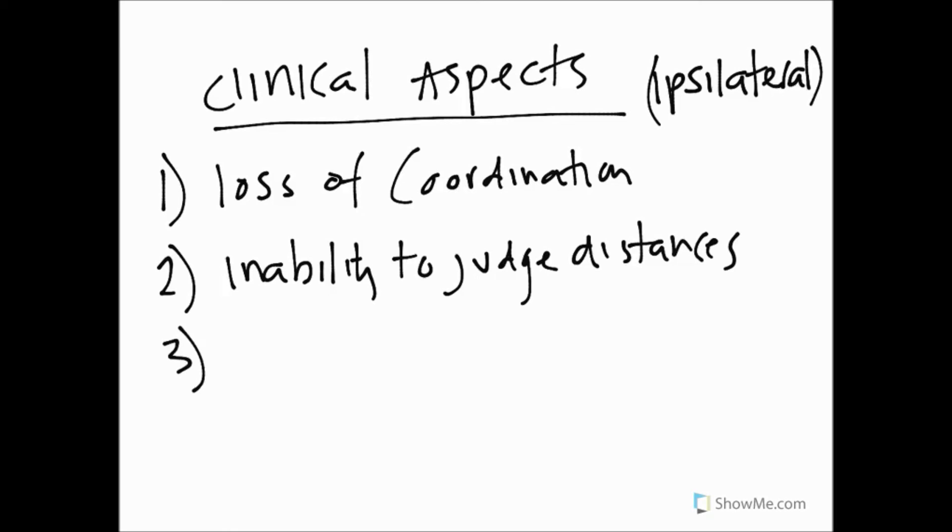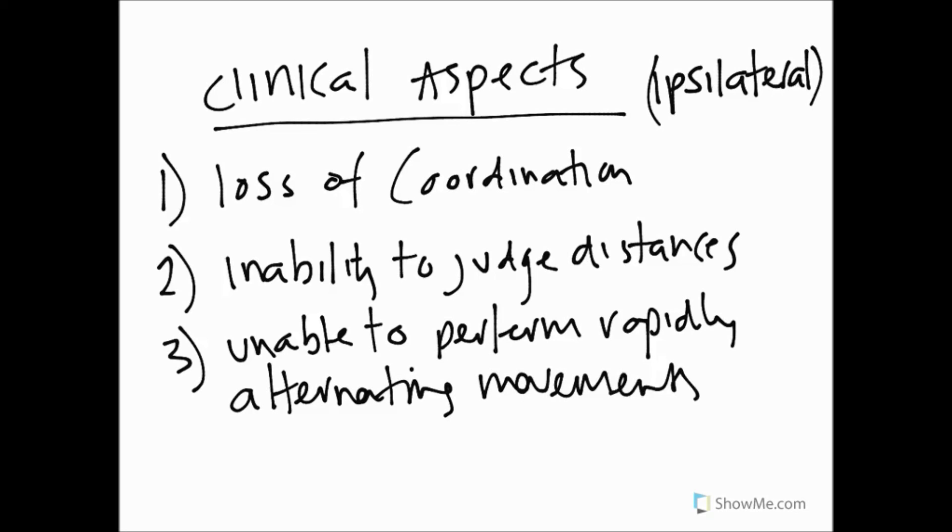Number three, we would expect any problem with trying to alternate between two different types of motor activity very quickly. So this is an inability to perform what we call rapidly alternating movements, such as pronation or supination of the hands. This is often a clinical test for cerebellar damage to see if somebody can actually supinate and pronate very quickly, because the fluidity of that movement will be damaged. So here we're going to call this unable to perform rapidly alternating movements.